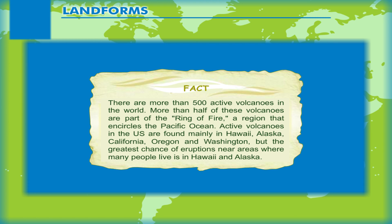Fact: There are more than 500 active volcanoes in the world. More than half of these volcanoes are part of the Ring of Fire, a region that encircles the Pacific Ocean. Active volcanoes in the US are found mainly in Hawaii, Alaska, California, Oregon and Washington. But the greatest chance of eruptions near areas where many people live is in Hawaii and Alaska.